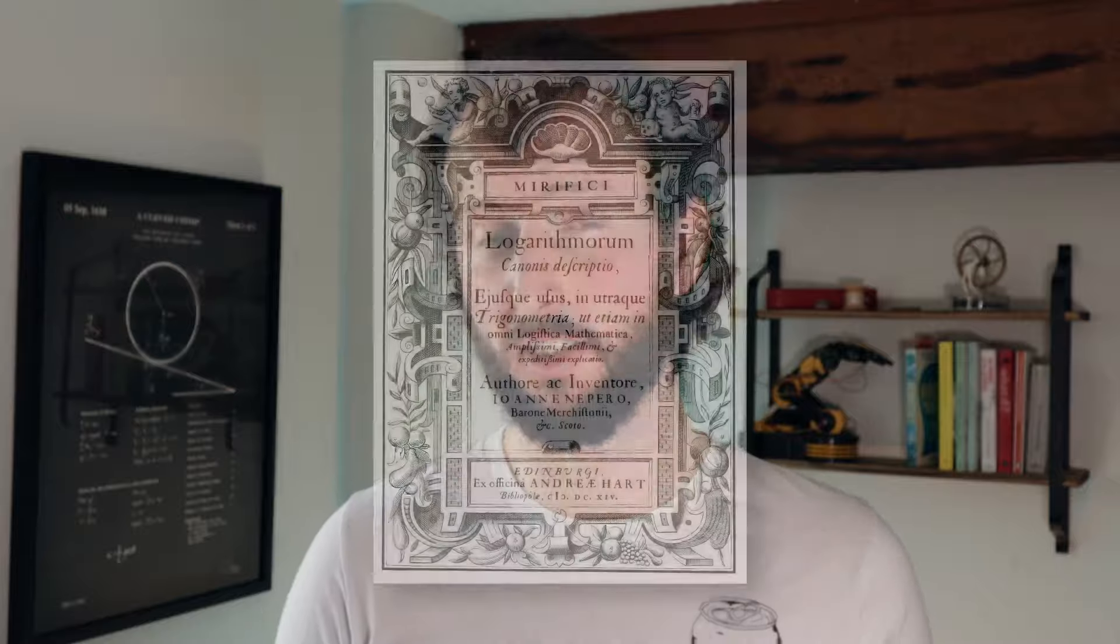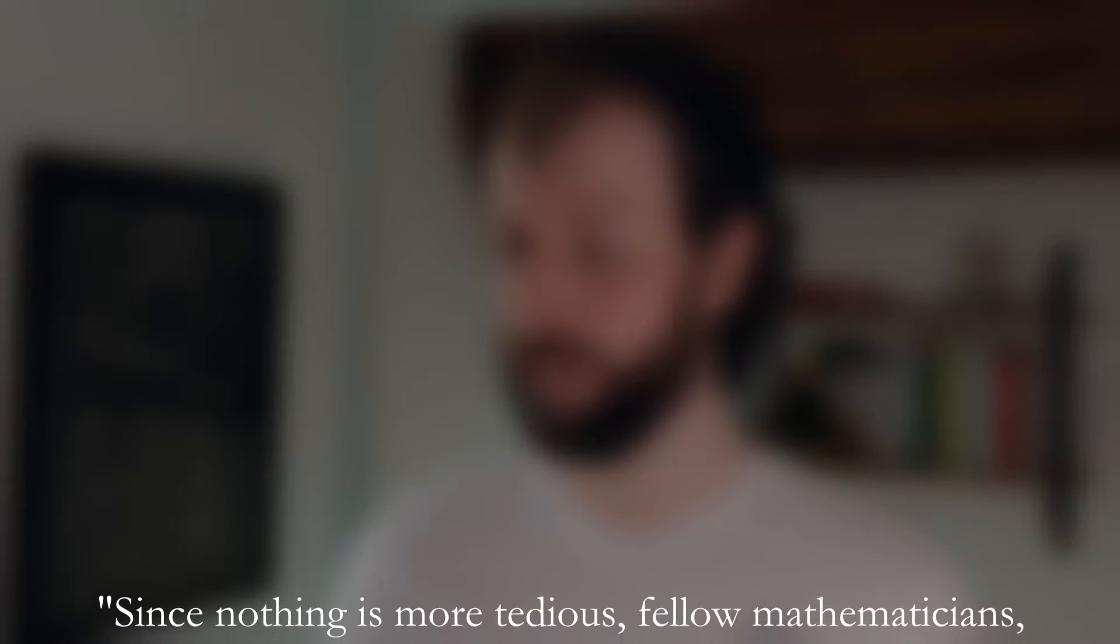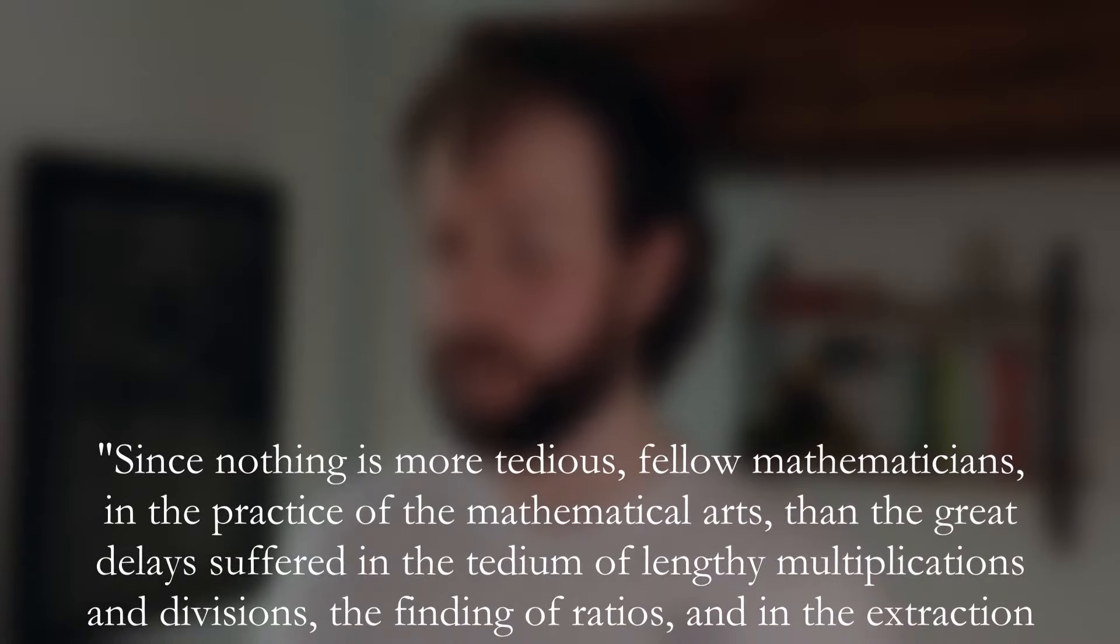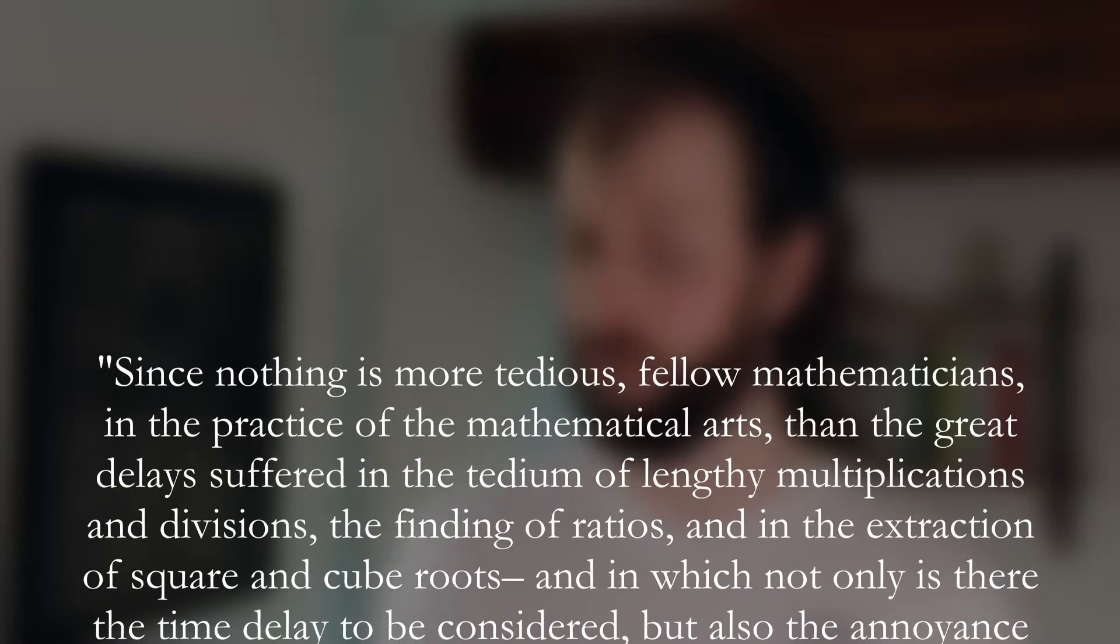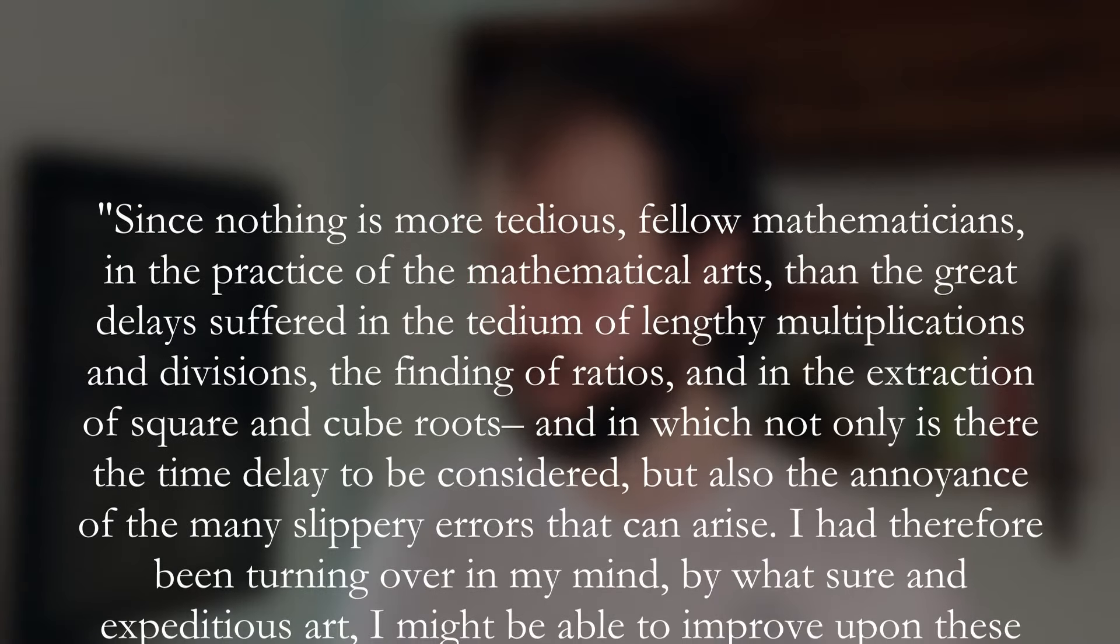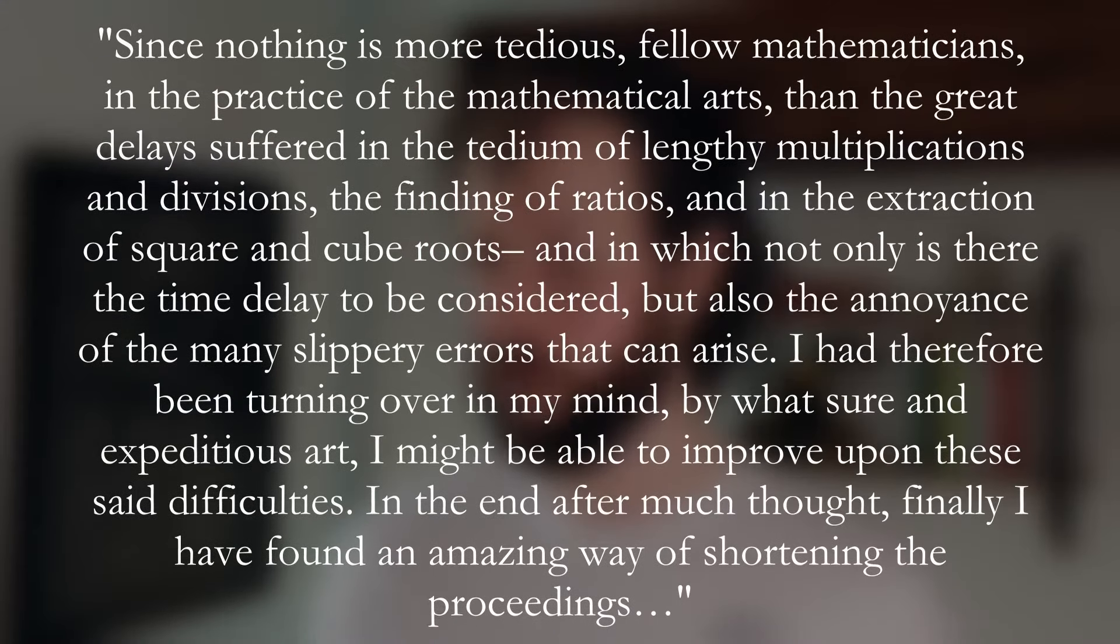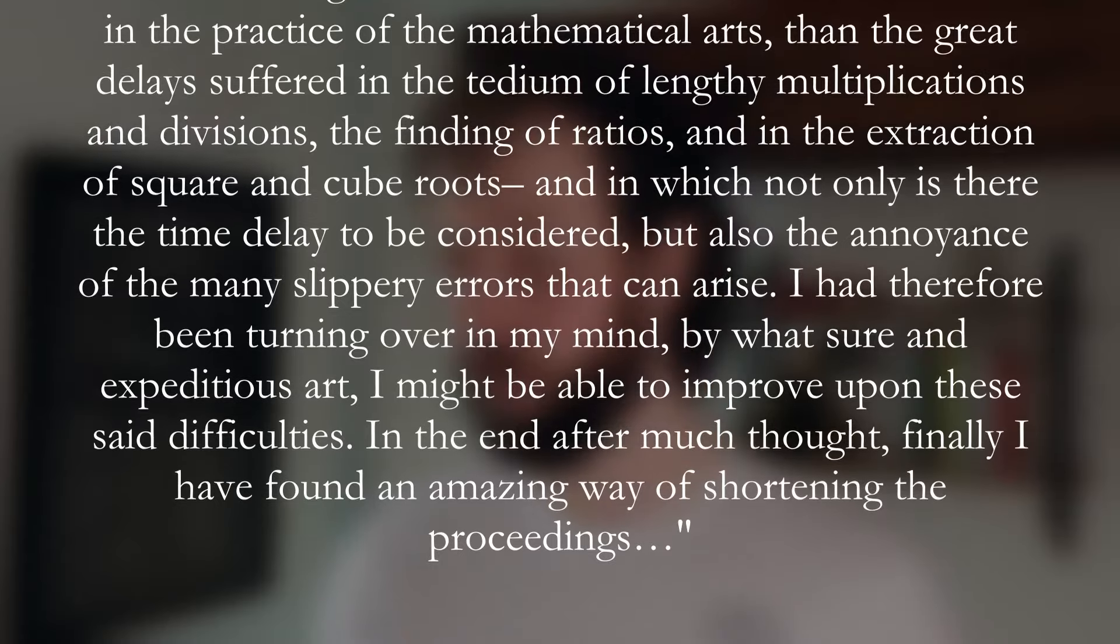He had thought of a far superior way of doing a similar thing. In 1614, Napier published a description of the wonderful canon of logarithms, written in Latin so that it may be as accessible as possible to the world. Turns out Napier was working on his logarithms for the best part of 20 years. These were going to be big, and he knew it. In the preface, he said, Since nothing is more tedious, fellow mathematicians, in the practice of mathematical arts than the great delays suffered in the tedium of lengthy multiplications and divisions, the finding of ratios and in the extraction of square and cube roots,